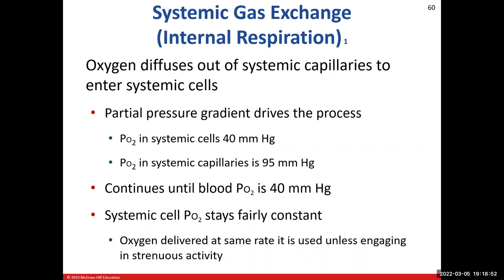I misspoke — previously we talked about external respiration, what was going on in the lungs. Now we're going to talk about systemic gas exchange, otherwise known as internal respiration. We're basically going to talk about what happens between our respiratory gases when the blood arrives to our systemic tissues and cells via the systemic capillaries. Partial pressure gradients play a huge role in driving this process.